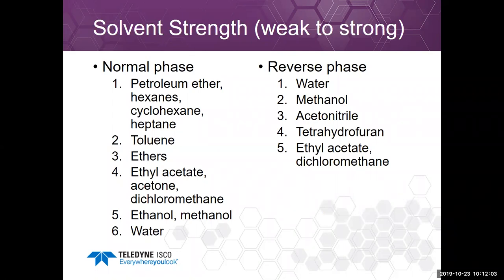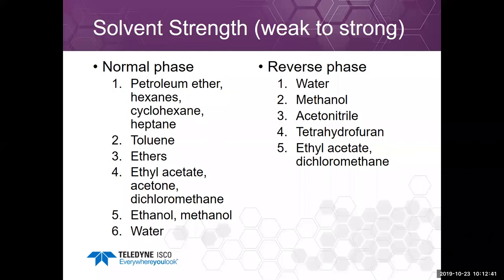For normal phase, the very weak solvents are petroleum ether, hexane, and alkanes such as cyclohexane and heptane. A stronger solvent is toluene, then the ethers. Ethyl acetate, acetone, and dichloromethane are actually fairly similar in polarity and therefore similar in solvent strength, and water is a very strong solvent. For reverse phase, the weak solvent is water — reversed from normal phase — and the stronger solvents are methanol, acetonitrile, tetrahydrofuran, ethyl acetate, and dichloromethane. Ethyl acetate and DCM are used for non-aqueous reverse phase, which we'll discuss briefly later.